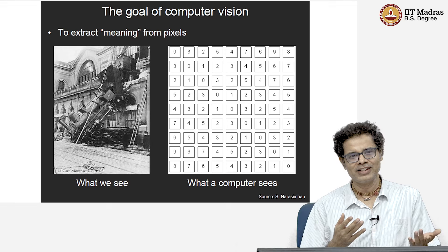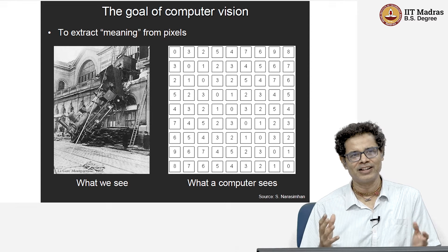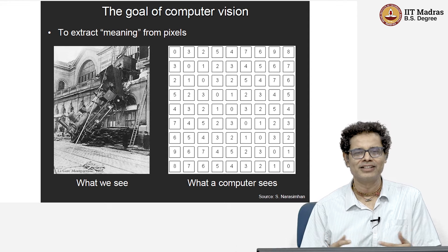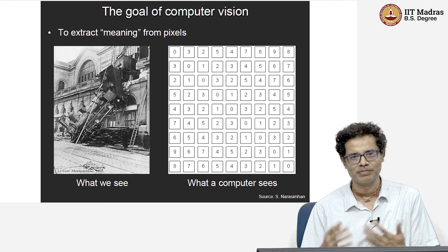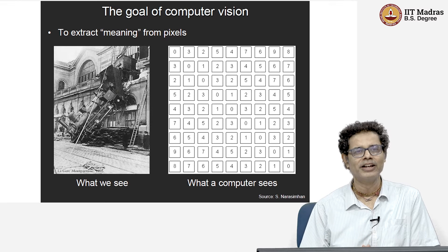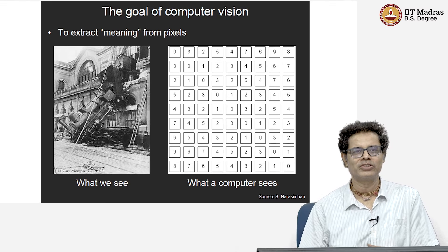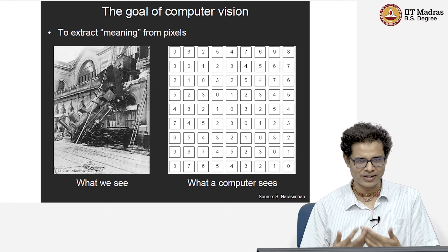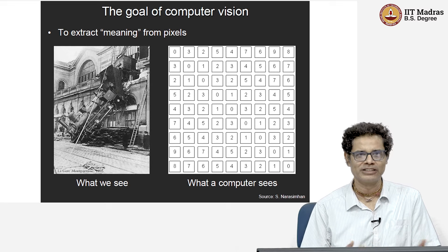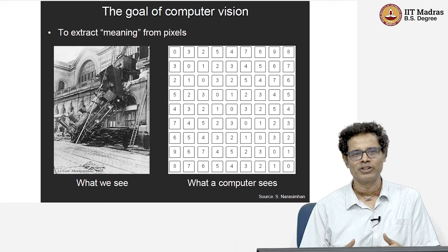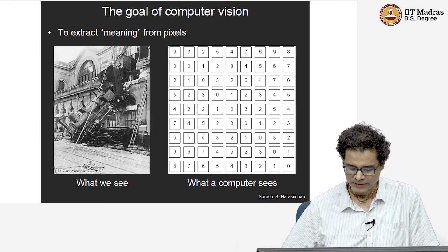When we see an image, we see that a train has crashed through a station. But a computer, when it sees, it just sees a series of numbers, a matrix of numbers. What we want is for the computer to see like us — to perceive how we perceive. That is the goal of computer vision: giving vision to the computer.